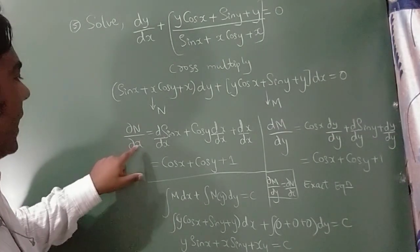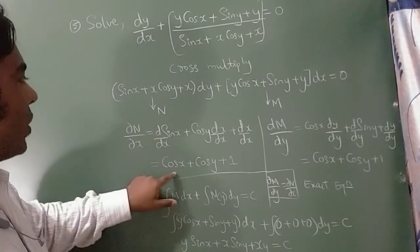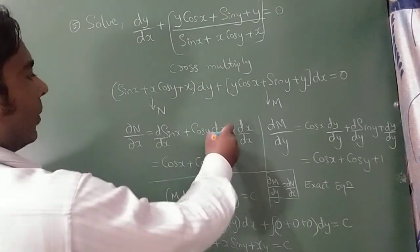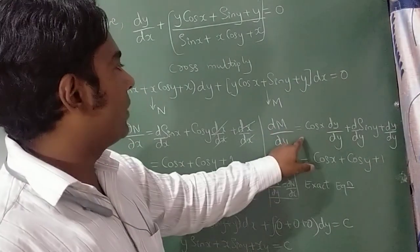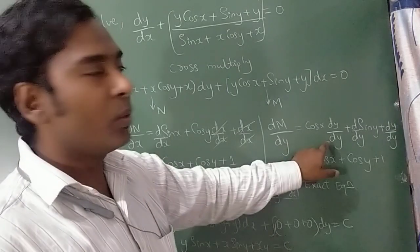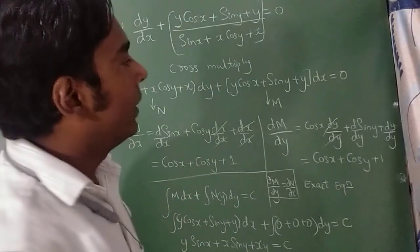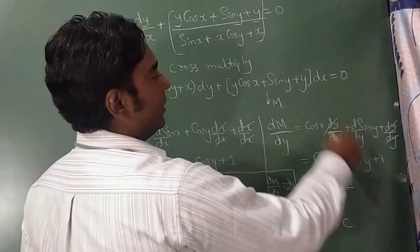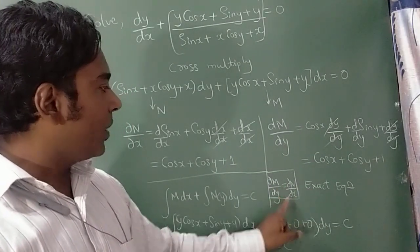Differentiating N with respect to x: d/dx of sin x = cos x, cos y remains as is, and dx/dx = 1. So ∂N/∂x = cos x + cos y + 1. Differentiating M with respect to y: cos x remains, d/dy of sin y = cos y, and dy/dy = 1. So ∂M/∂y = cos x + cos y + 1. Both are equal — this is an exact equation.